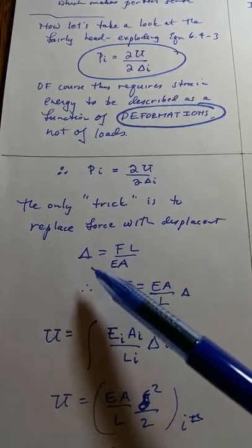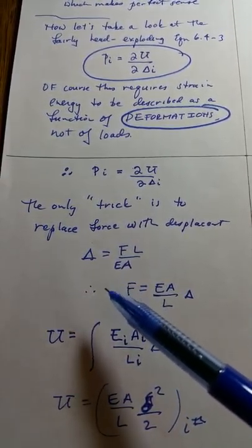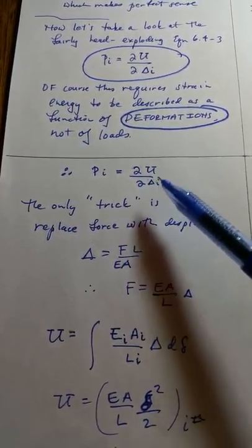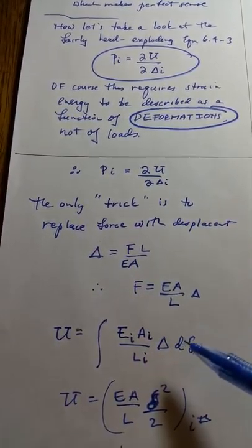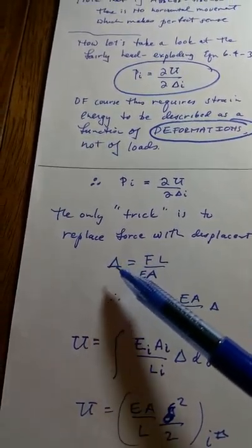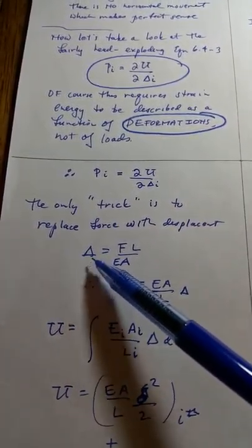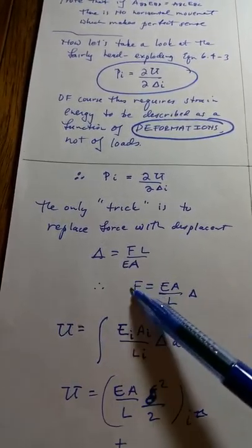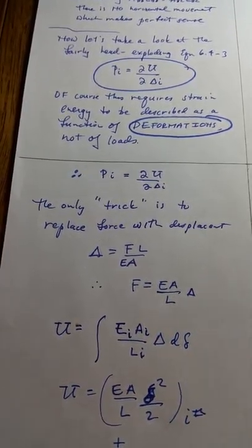But there's only one trick here, in that you really need to get those, what you thought of as forces before, now must be displacements here. So for an axial member, it's quite straightforward. Delta is fl over ea, the famous flea formula. So f is ea over l times delta.